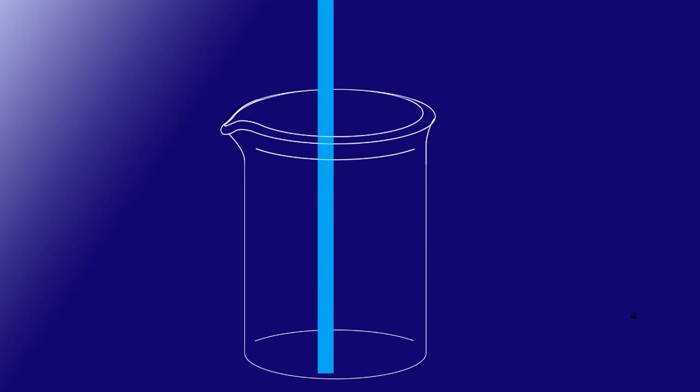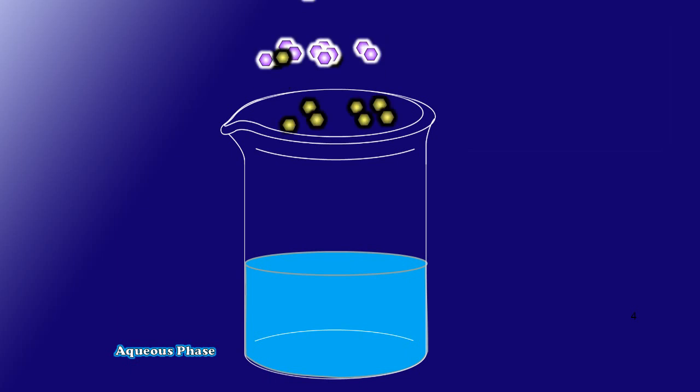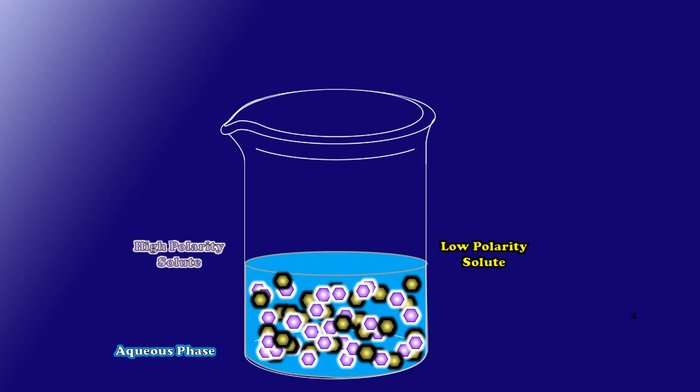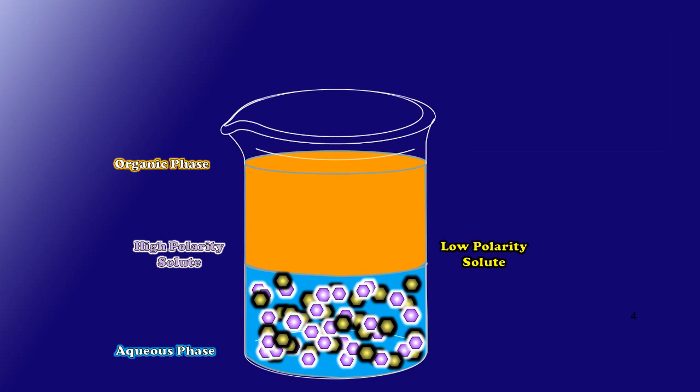So now let's watch this phenomenon take place. I'm going to take a single beaker this time and again add some water, but now I'm dissolving my mixture of both compounds in the same aqueous phase. To that I'm going to add my organic solvent. So now I'm going to have two different phases into which my two different solutes can partition.